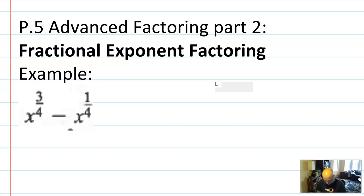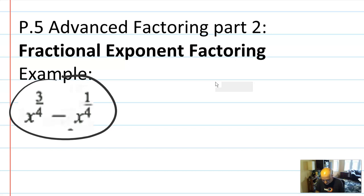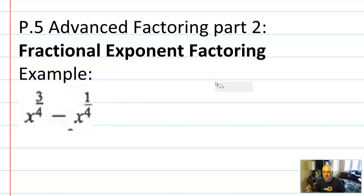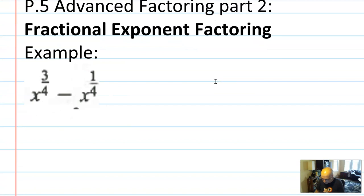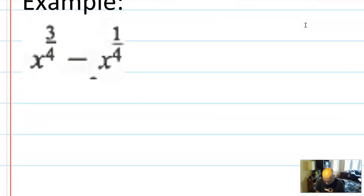Here's an example of a problem. You might have x to the three-fourths minus x to the one-fourth, and you might want to factor this. When we're factoring polynomials with integer exponents, you're usually trying to find the zeros or make it nice in some way. But if you've got an expression like this, you're probably just stuck with it and trying to factor it to figure out what to do with it. It's that idea in math that sometimes you just need to change a form so that you can better understand it — that is the main purpose of this.